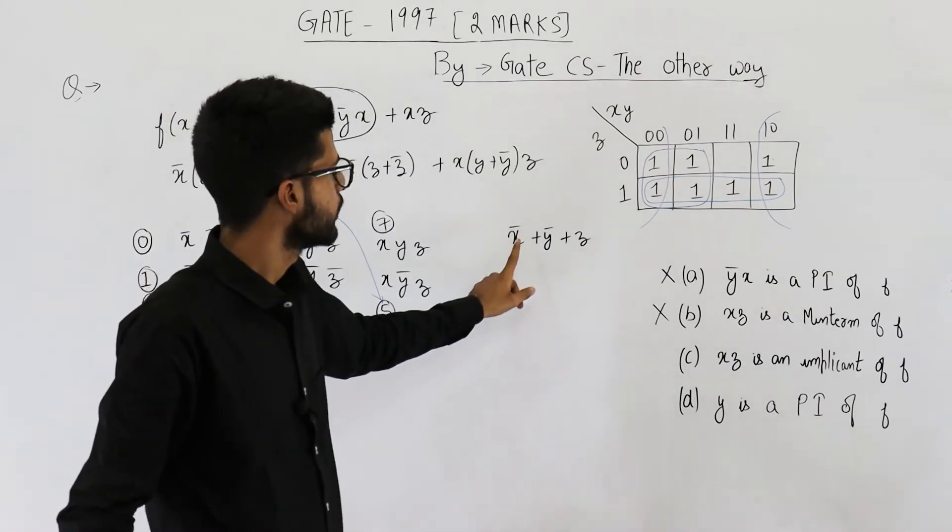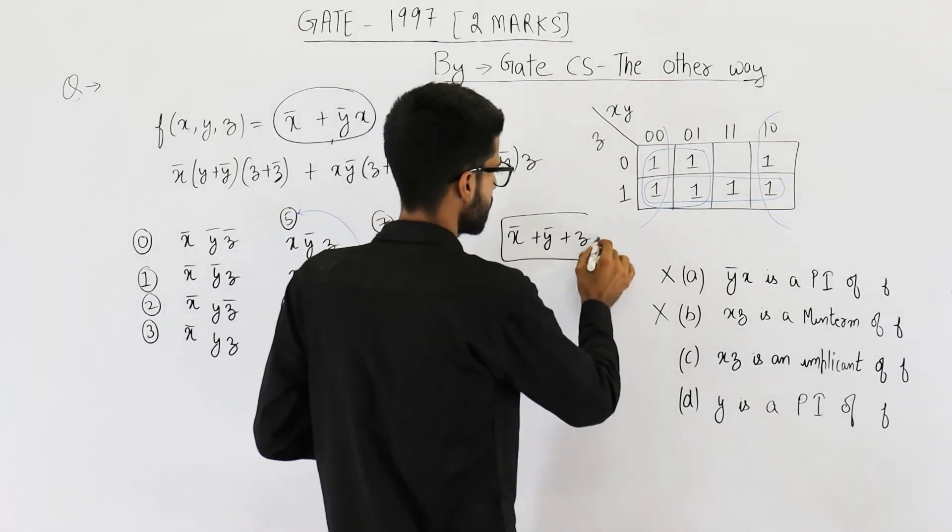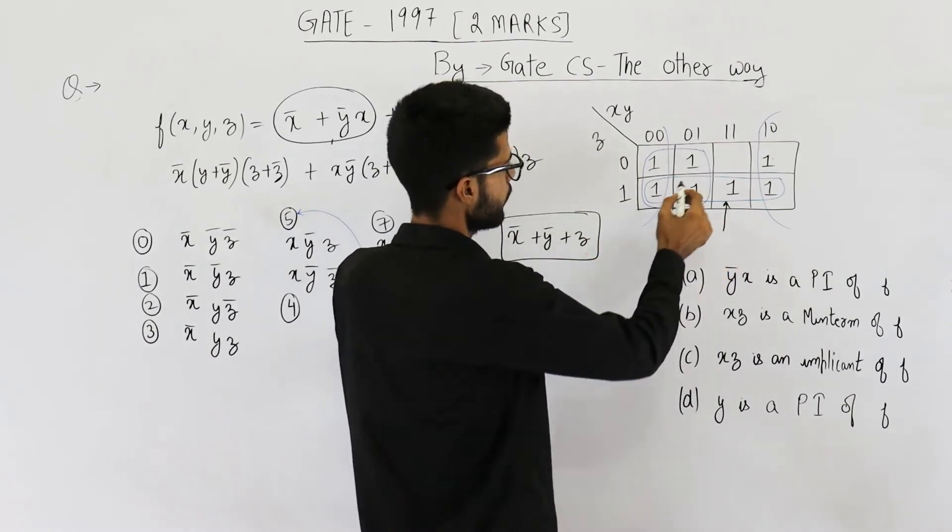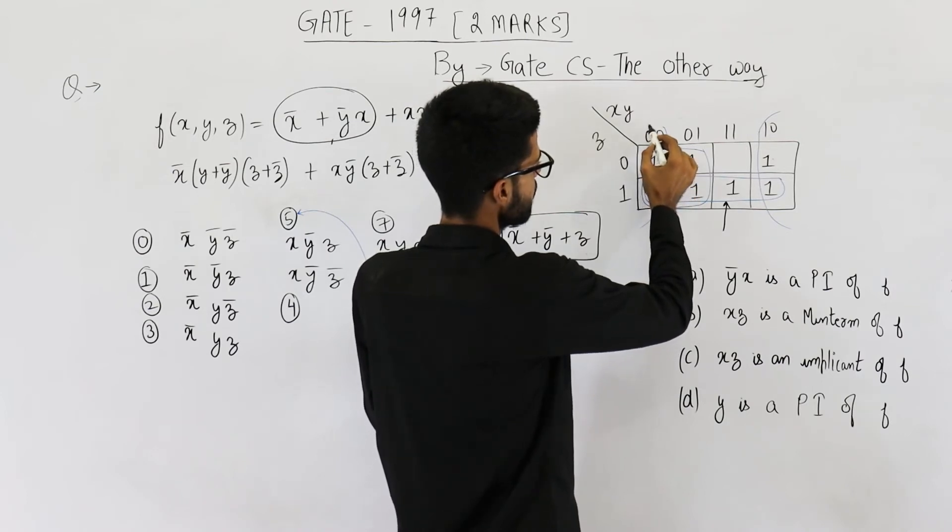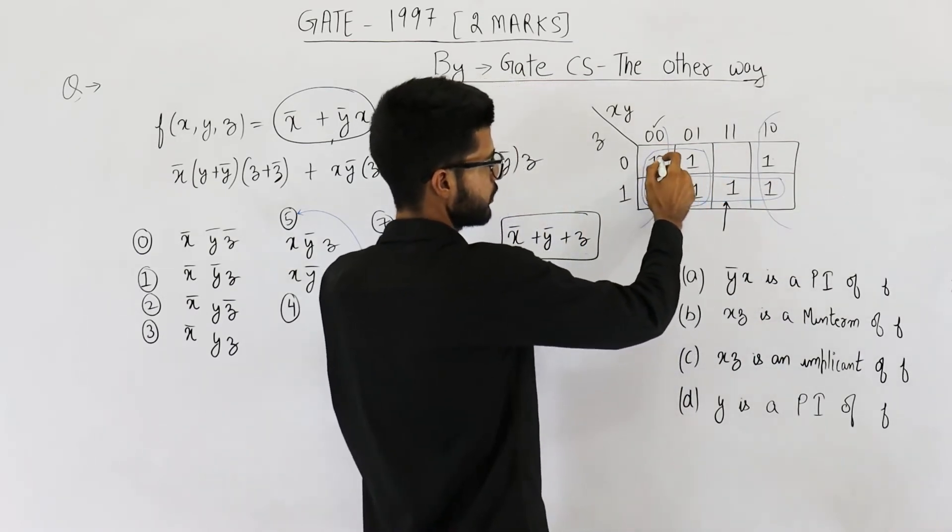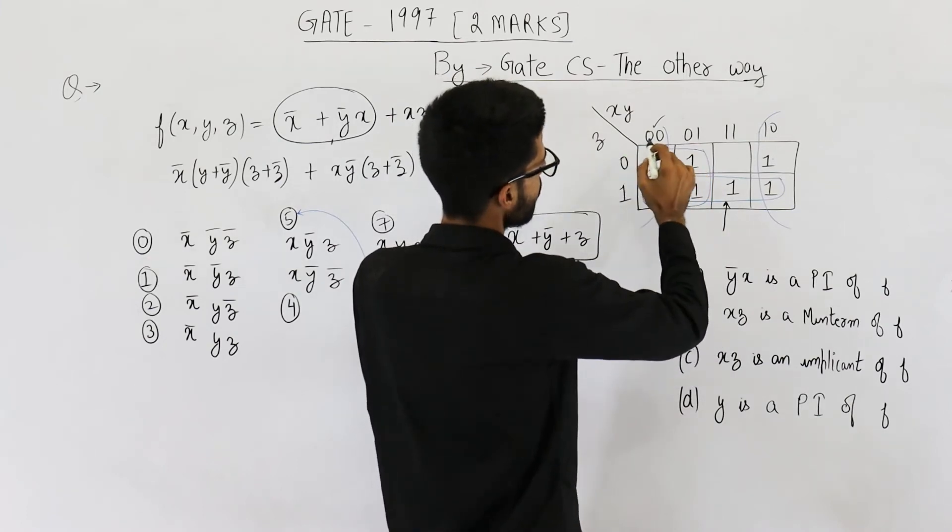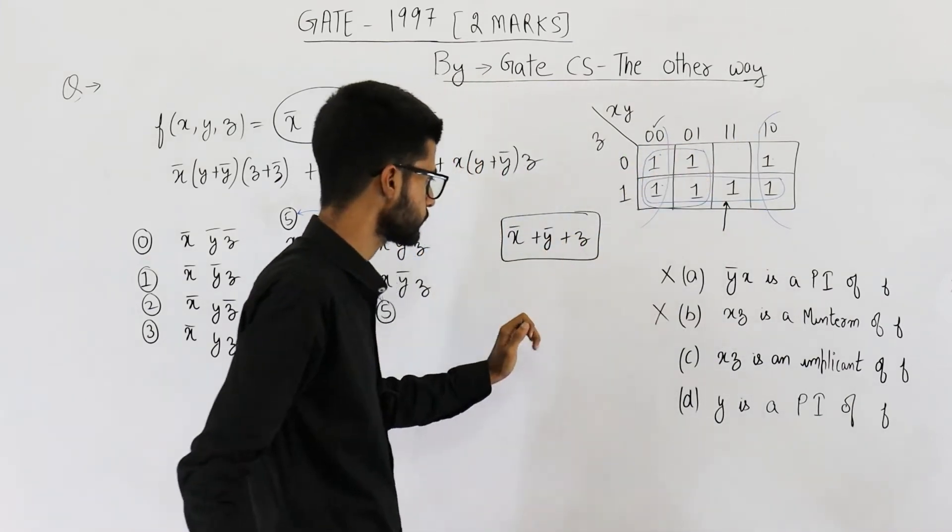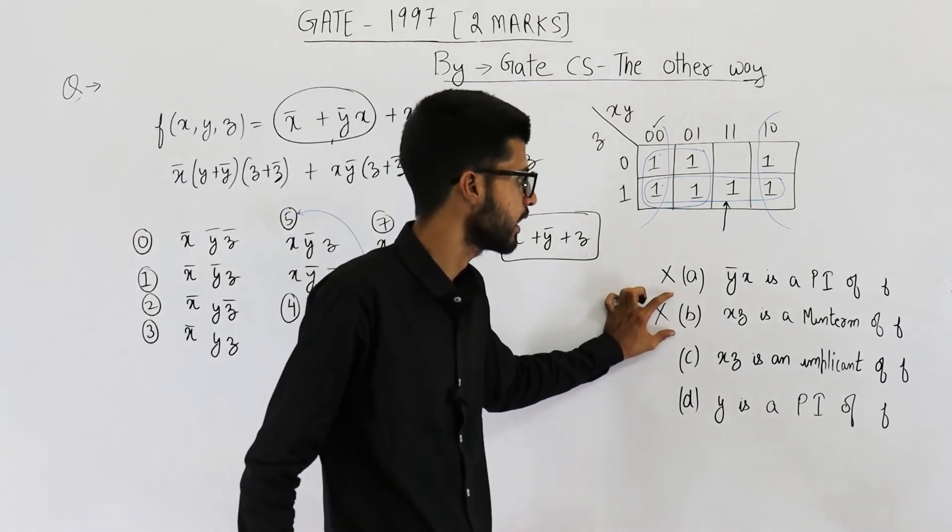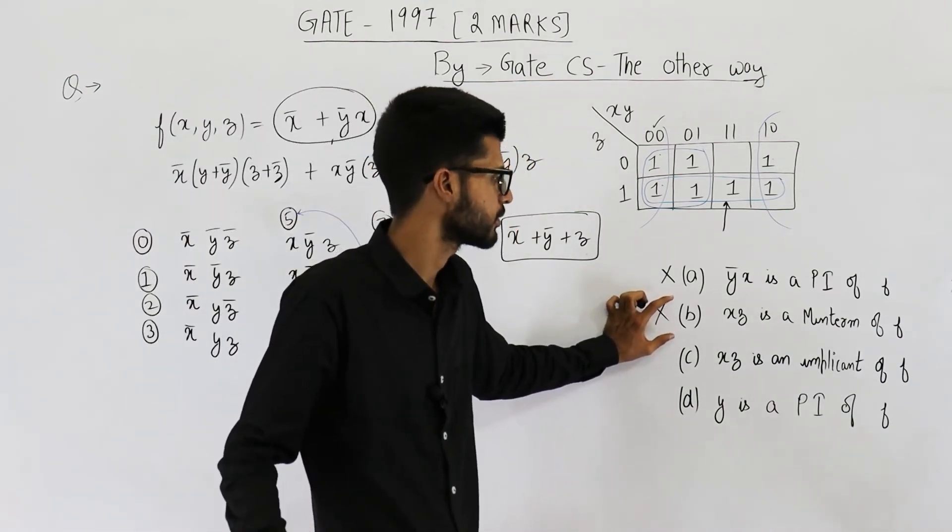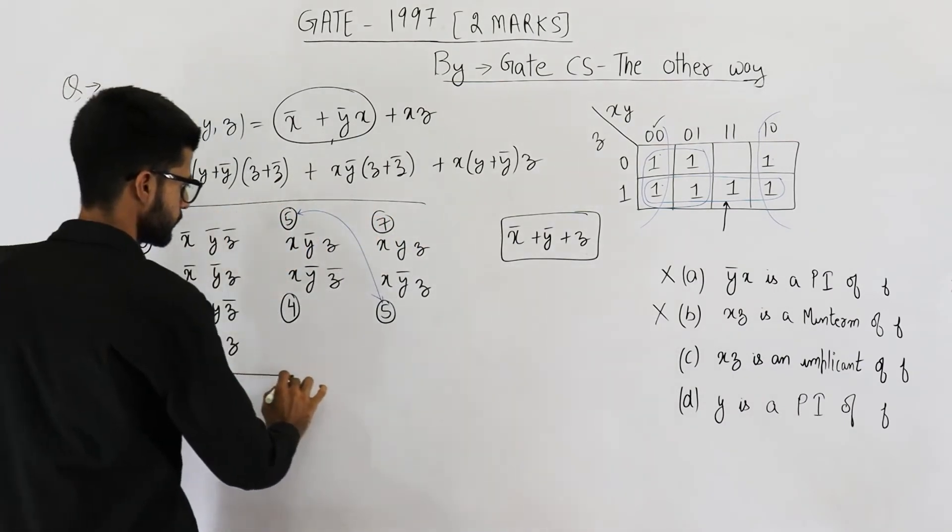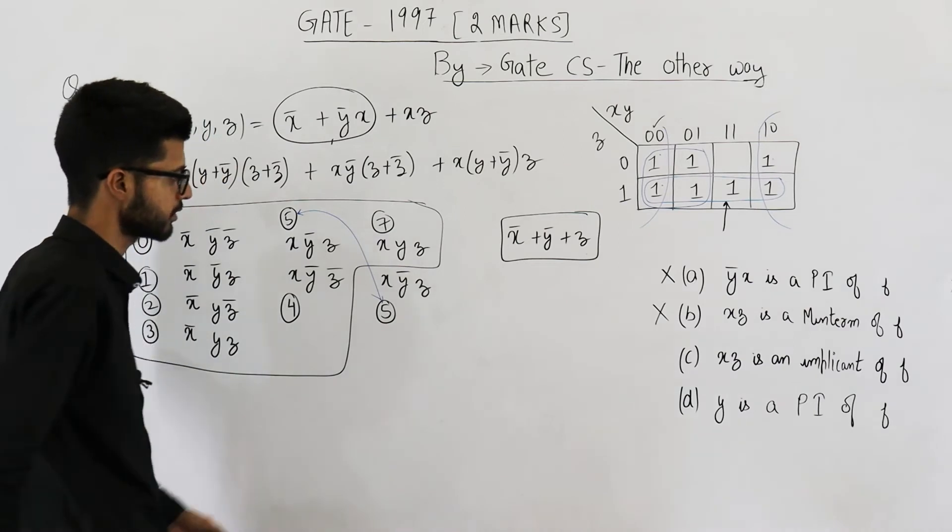And you can confirm that the minimal expression will be x bar plus y bar plus z. So this group would lead to z. This one, this group would lead to x bar. And this group, this one, the corner, these four ones, they would lead to y bar. And this is the minimal expression or the minimal SOP. Now we were analyzing this option B. They are saying x, z is a minterm. That's not even possible because minterm will have three literals. Anyways, all the minterms for this question are written here. These are the minterms. This one is just a duplicate.